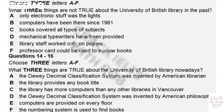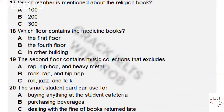Now you know that library books are arranged according to the numbers on the back of each book. Does anyone know the name of this numbering system? Right, the Dewey Decimal Classification System, which was invented by Melville Dewey, an American librarian — not John Dewey, the philosopher.